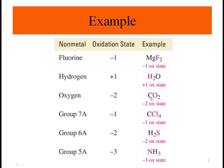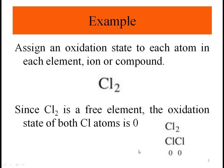So carbon in CO2 is plus four. For Group 7A, the oxidation state is minus one — like CCl4, minus one for each chlorine atom. Group 6A is minus two, such as sulfur in H2S. And Group 5A is minus three, like nitrogen in NH3, the ammonia compound.